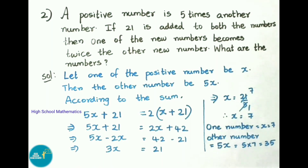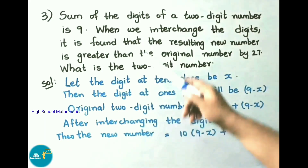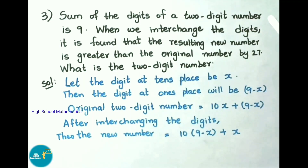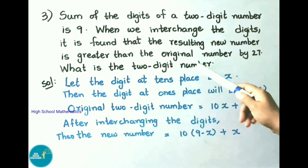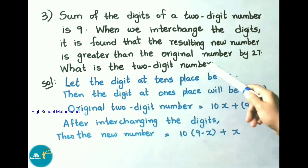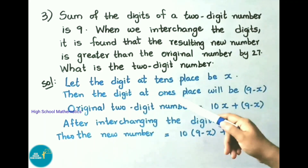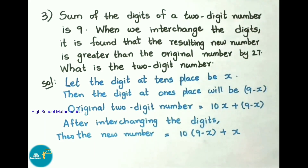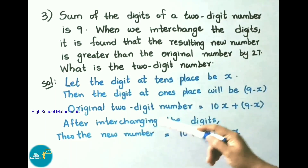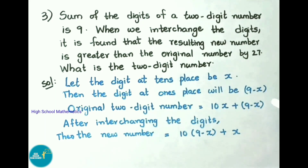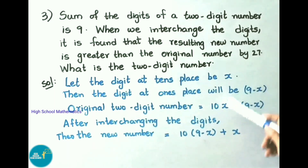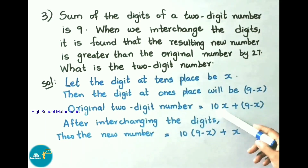Question number 3: The sum of the digits of a two-digit number is 9. When we interchange the digits, the resulting new number is greater than the original number by 27. What is the two-digit number? Let the digit at the tens place be x, then the digit at the units place will be (9 − x). The original two-digit number is 10x + (9 − x).